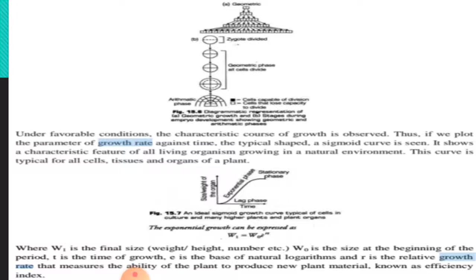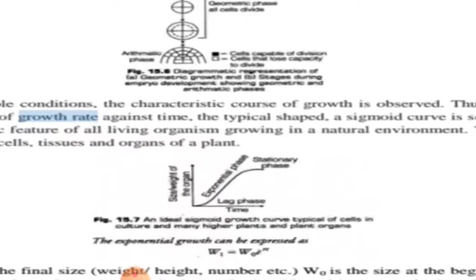Where W(t) is the final size (weight, height, number), W₀ is the size at the beginning of the period, t is the time of growth, e is the base of natural logarithm, and r is the relative growth rate that measures the ability of the plant to produce new plant material, known as efficiency index.